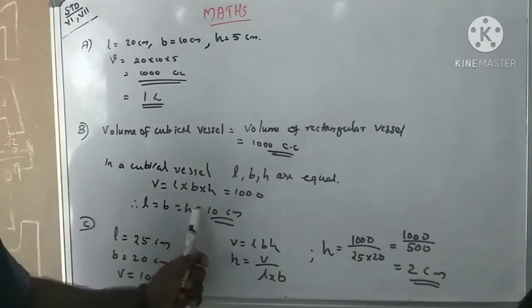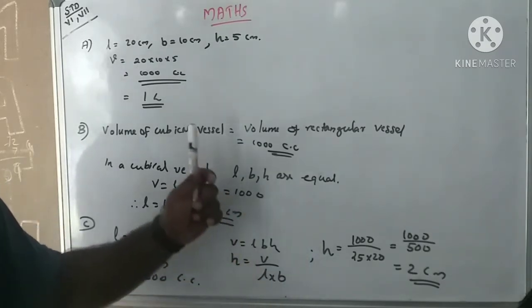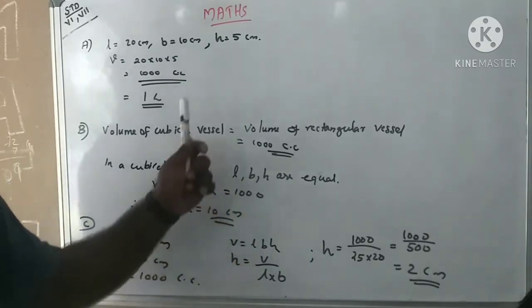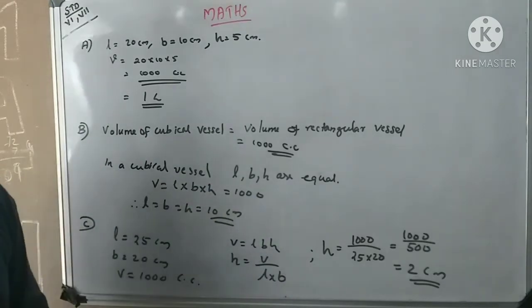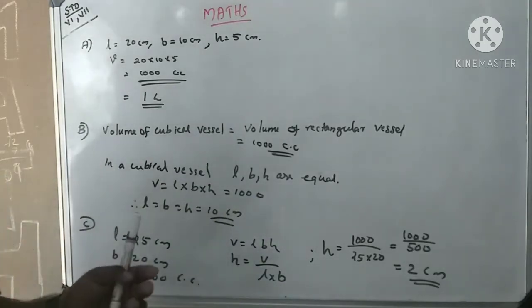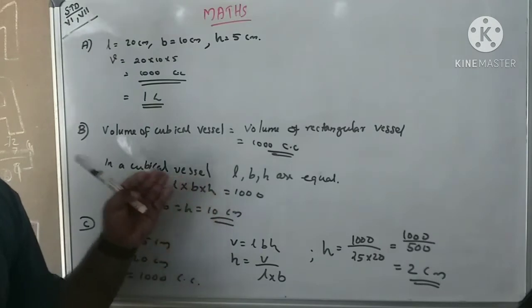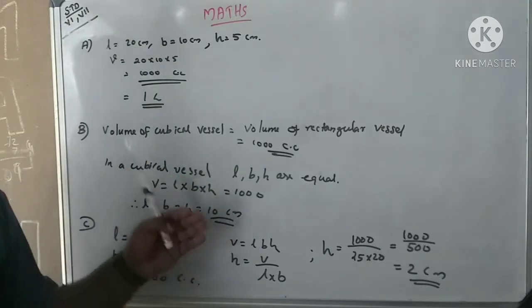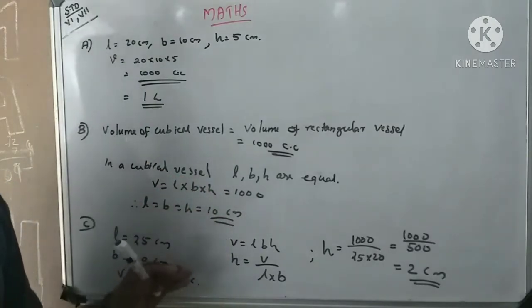Length, breadth, and height are each 10 cm. One side of the cubical vessel equals 10 cm. For part C, the inner length is 25 and inner breadth is 20.